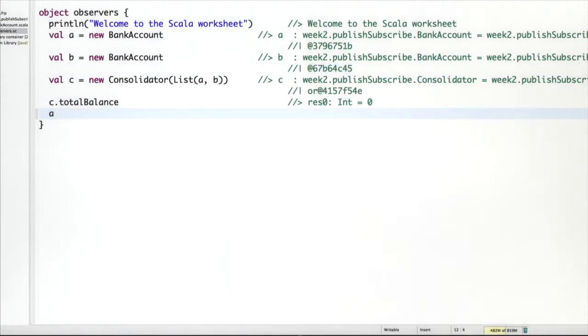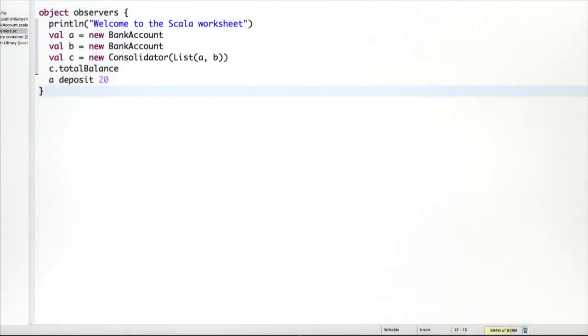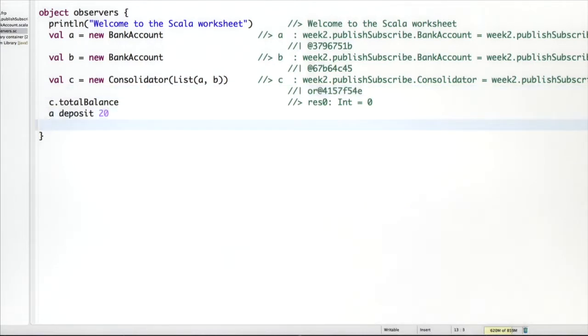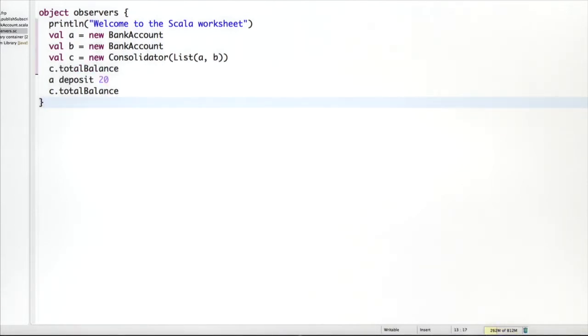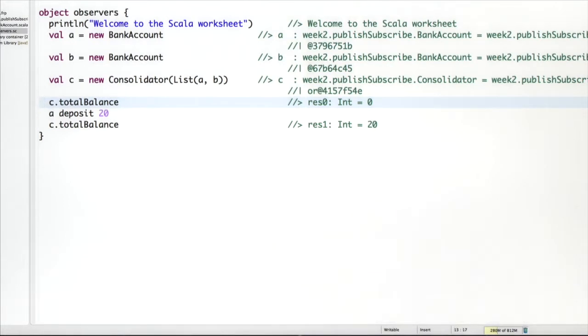So let's do something with the accounts. Let's say we want to deposit 20 currency units in A. And we want to find out what's the total balance now. And that would give us 20. Well, no big surprise, but remember the total balance actually does not by itself always recompute. So indeed it only gives you the current variable total in the consolidator. So the consolidator has updated itself as you can see there. Let's do another step. Let's deposit 30 units in B and check the total balance here. And we would get 50 as expected.